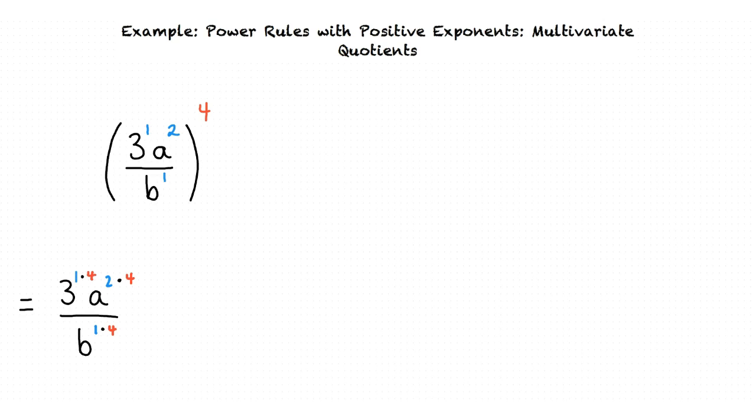3 to the 1 times 4 power equals 3 to the fourth. a to the 2 times 4 power equals a to the eighth. And b to the 1 times 4 power equals b to the fourth.